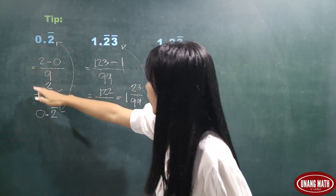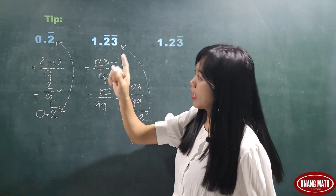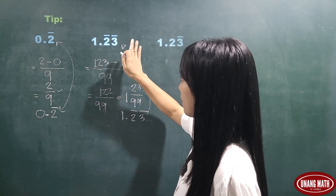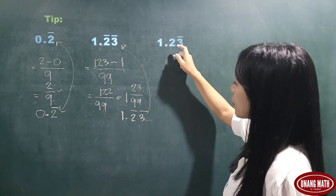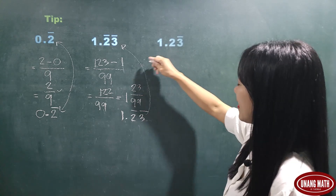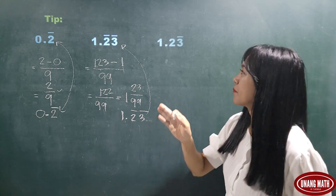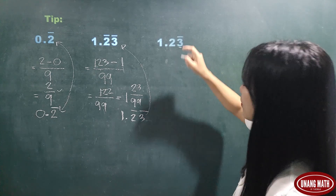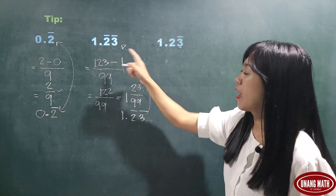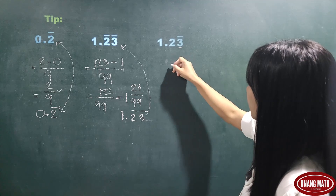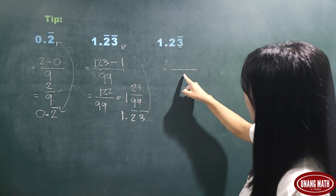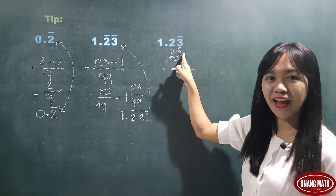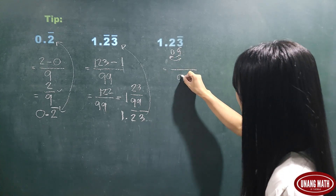Be careful: you can only use this tip if the digits after the decimal point are all repeating. If there is a digit that is not repeating after the decimal point, this tip will not work. For example, consider 1.23 where only the digit 3 is repeating. If we follow this tip for the denominator, we get 9 and 0 — but we have to interchange so that 9 comes first before 0, giving a denominator of 90.